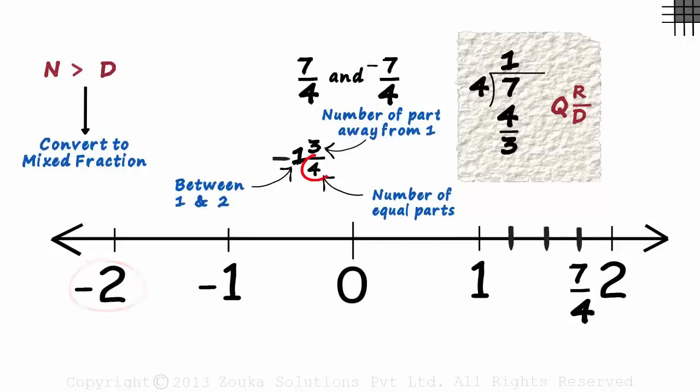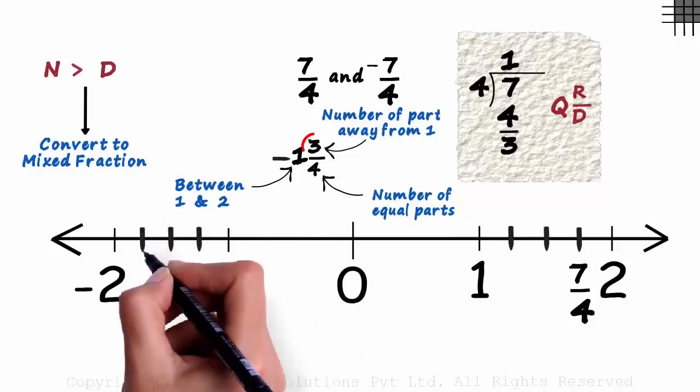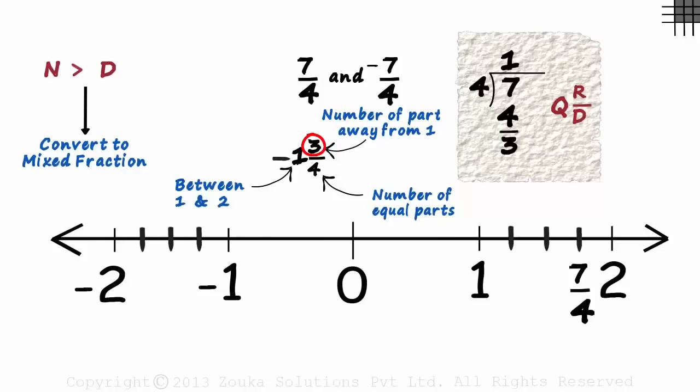The denominator tells us the number of equal parts this length is divided into. So we divide it into 4 equal parts by marking 3 lines. The number 3 tells us the number of equal parts from the number minus 1. So leaving 3 parts from minus 1, we mark minus 7 by 4 here.